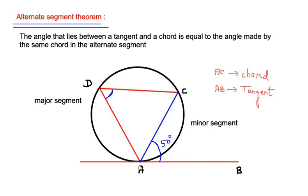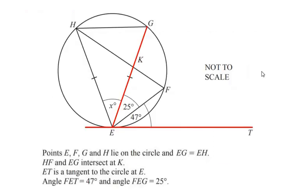If it makes an angle of 50 degrees in the minor segment with tangent AB, then the same angle is going to be made in the alternate segment by the same chord. So if this is 50 degrees, this is going to be 50 degrees. Let us try to use this theorem for the given example above.